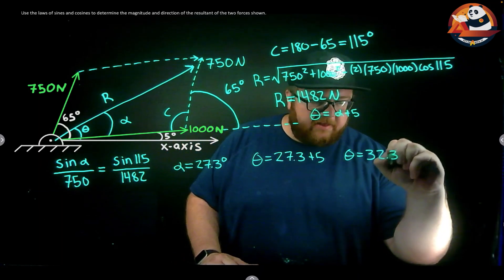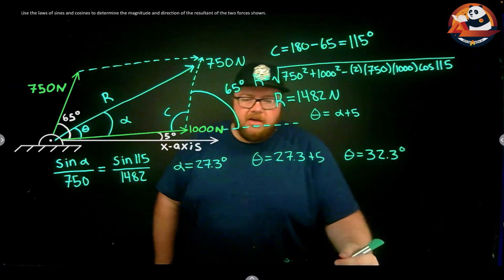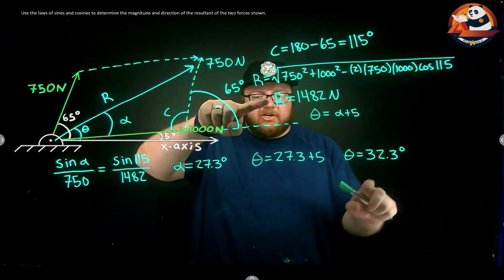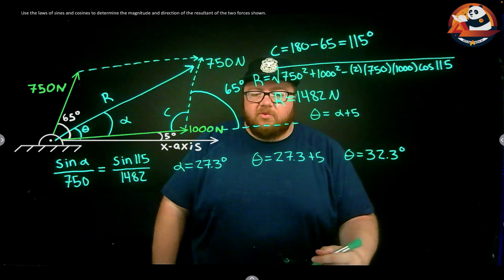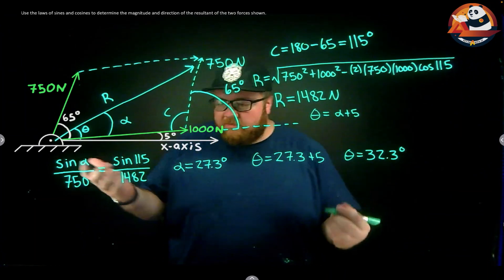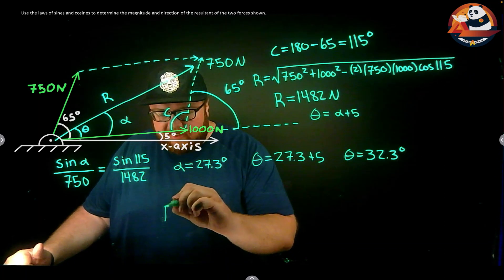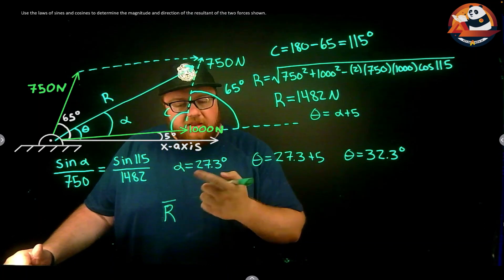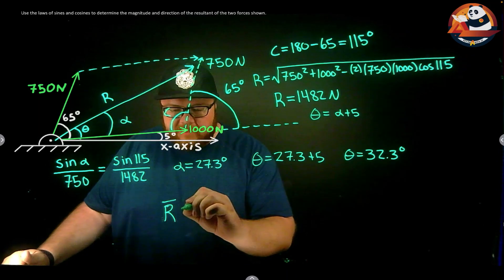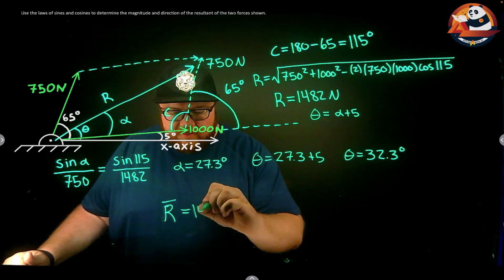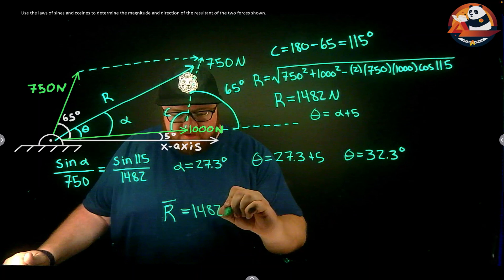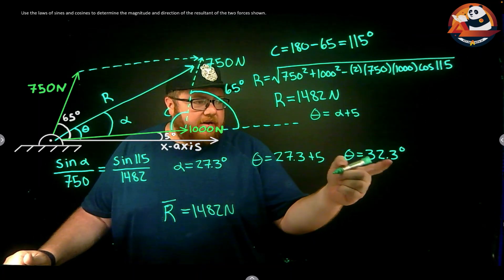We'll finish up our problem. So we would get here that our resultant as a vector (I'm going to put a line over it to say it's a vector) is my magnitude, 1482 newtons.